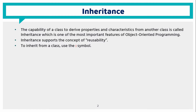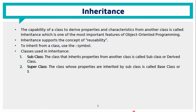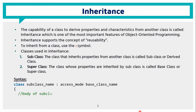Inheritance uses a colon symbol. The already existing class is called the superclass. The class that inherits is called the subclass or derived class. The property from the base class is inherited into the subclass.